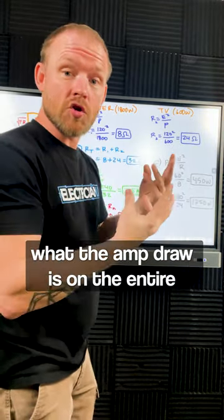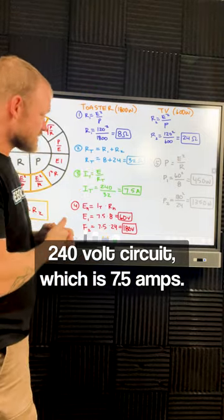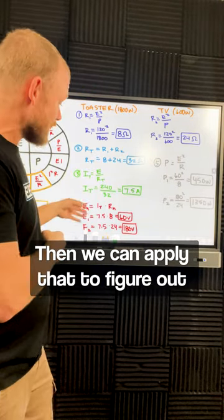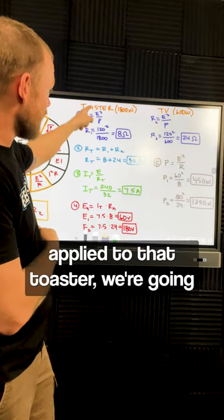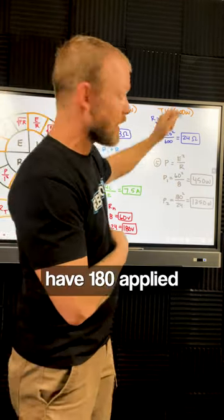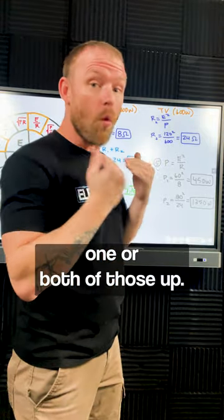Then we can figure out what the amp draw is on the entire 240 volt circuit, which is 7.5 amps. We can apply that to figure out what the voltage for each load is. In this situation, we're going to have 60 volts applied to that toaster and 180 volts applied to the TV. That's going to burn one or both of those up.